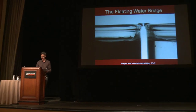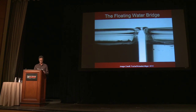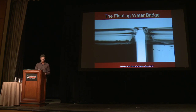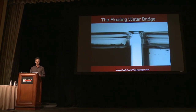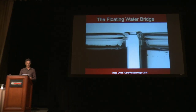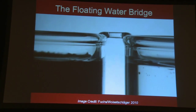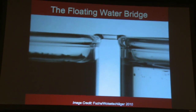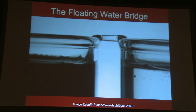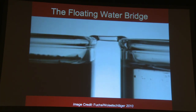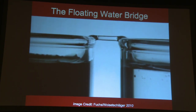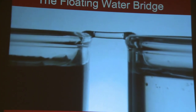We're starting off with the floating water bridge. You've already seen this a couple of times, courtesy of Professor Pollock and Elmar Fuchs who made the film. The floating water bridge forms between two beakers of pure water when a large potential difference of about 15,000 volts or above is applied between them. There's a nearly cylindrical tube of water, one to two millimeters in diameter, between the beakers, and the tube can be stretched up to about 25 millimeters long.